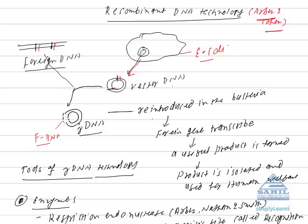The two DNAs are joined by using a specific enzyme called ligase. This new combination of DNA is called recombinant DNA.